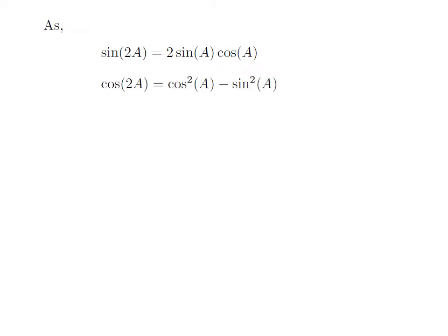We also know cosine of 2a is equal to square of cosine of a minus square of sin of a. The proof of this trigonometry identity has been explained in the video appearing in the upper right corner, and the URL has also been mentioned in the description section.